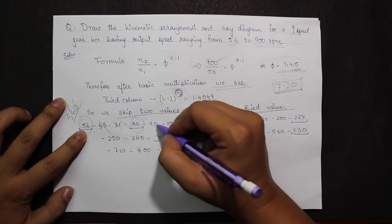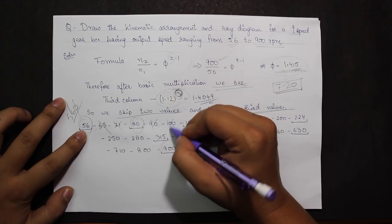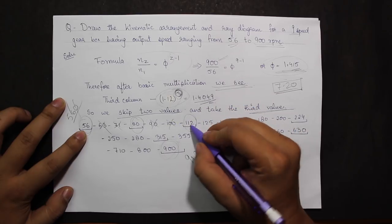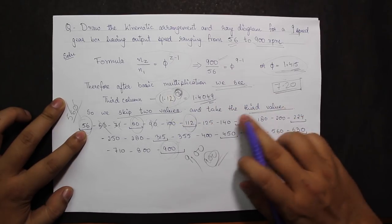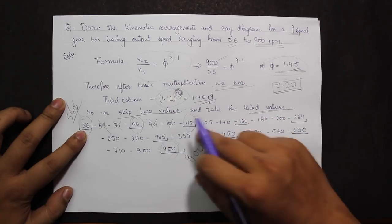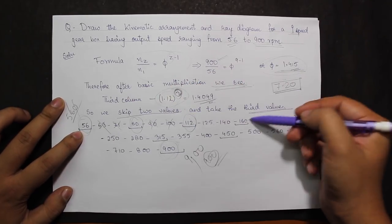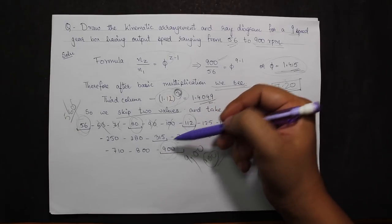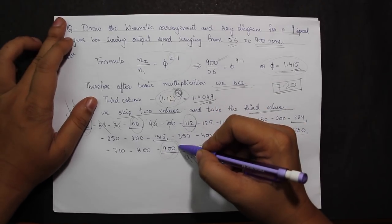Similarly, I will be skipping 90 and 100, then taking the value 112. Continuing this procedure by skipping two values, finally I will be getting these speeds which have been underlined, the final speed here being 900.